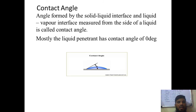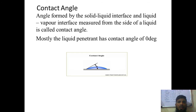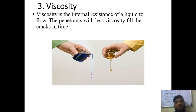The second property is contact angle — when you apply the developer, it creates a contact angle between the liquid penetrant and the surface, similar to capillary rise and capillary fall studied previously. Based on that angle, you can observe the developer easily. Third is viscosity — the internal resistance to the flow of a liquid. A penetrant with less viscosity fills cracks in less time, meaning the dwell time will be shorter.